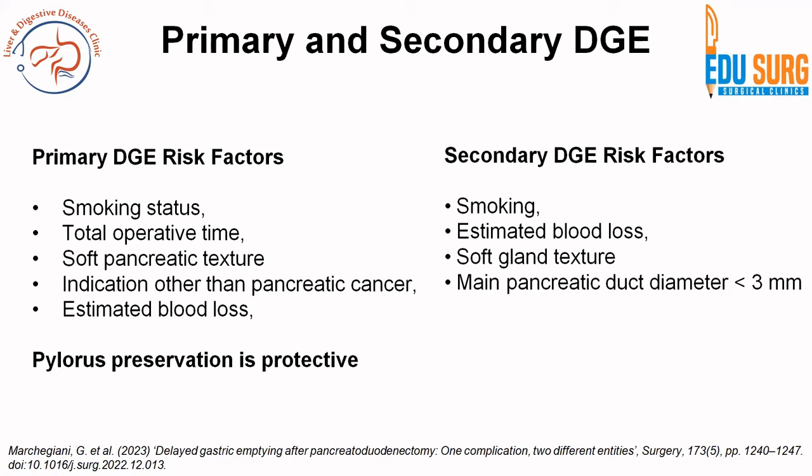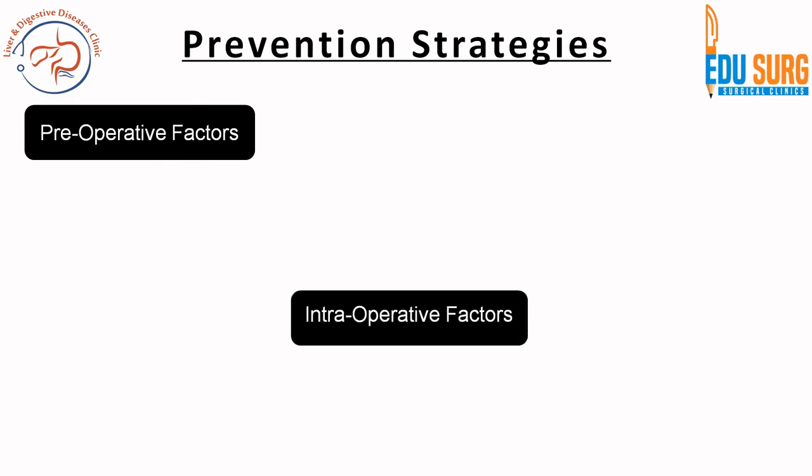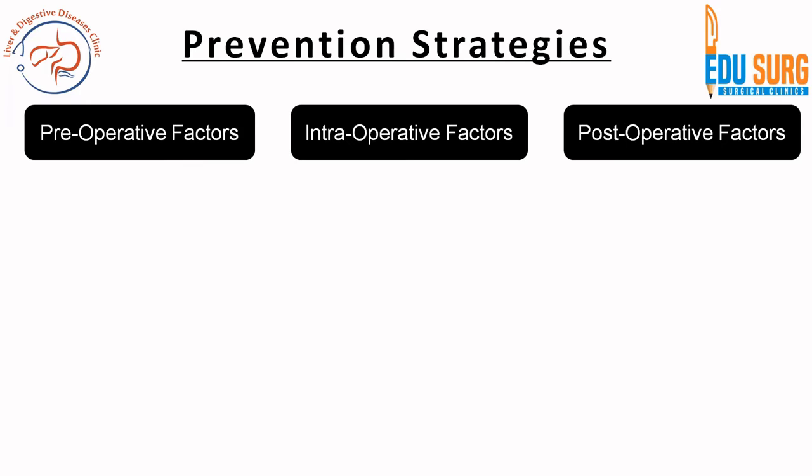From other articles, the risk factors for primary and secondary DGE are as follows. Smoking and blood loss/blood transfusion are risk factors for both primary and secondary DGE. Soft pancreatic texture is a risk factor for both. MPD less than 3 mm is a risk factor for pancreatic fistula and therefore for secondary DGE. Pylorus preservation is protective in primary DGE but is a risk factor in secondary DGE. Once risk factors are known, pre-operative, intra-operative, and post-operative factors can be addressed to prevent delayed gastric emptying.